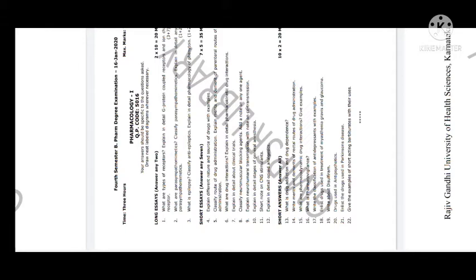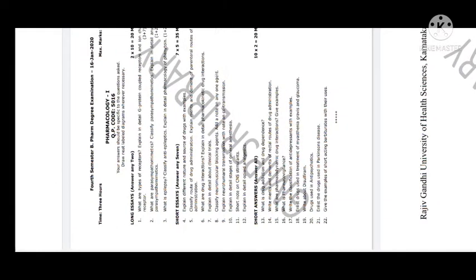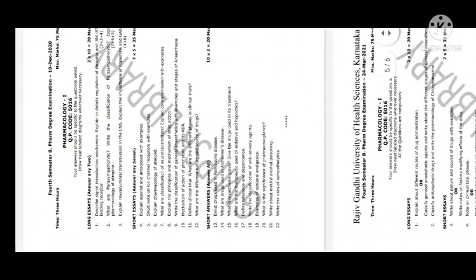Classify neuromuscular blocking agents with a note on any one agent. Explain neurohormonal transmission with a note on co-transmission. Stages of general anesthesia — you have to explain the anesthesia stages. Write a note on CNS stimulants and opioid analgesics.